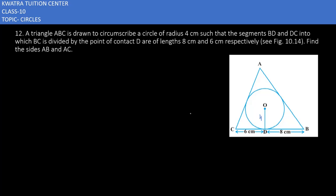First of all, you can make some points on the left and on the right respectively. Joining OF and OE — the value for OF and OE will be 4 respectively, because they are the radius. Now if you look at FC and CD, they are tangents, and tangents will be equal because they are meeting at one external point.